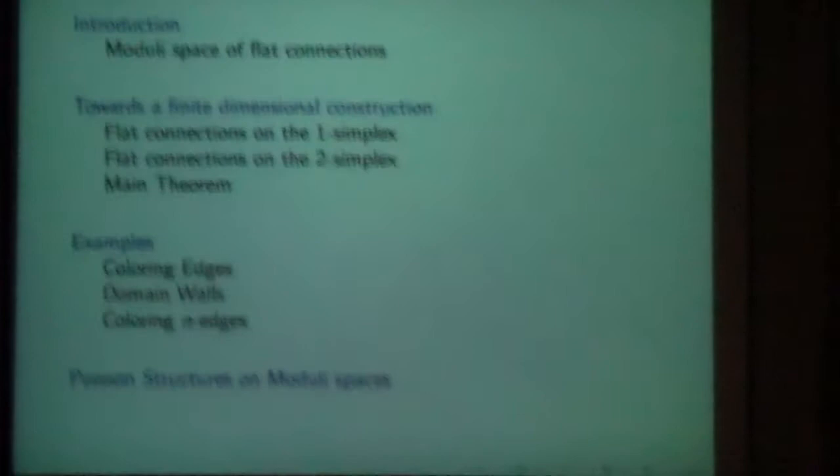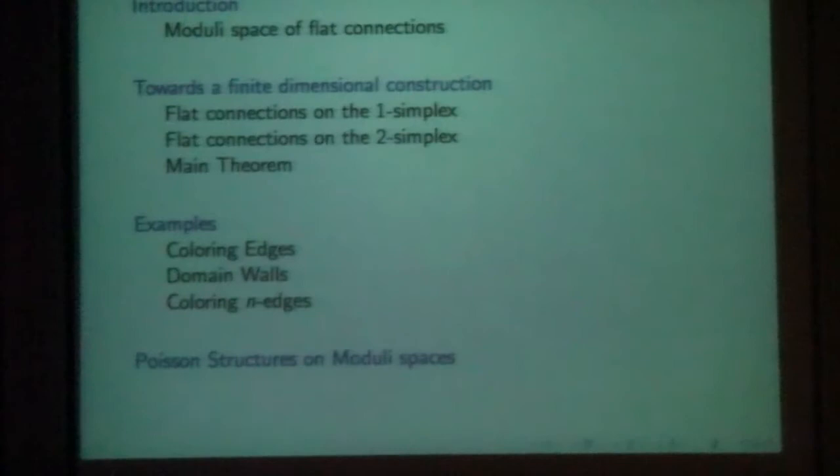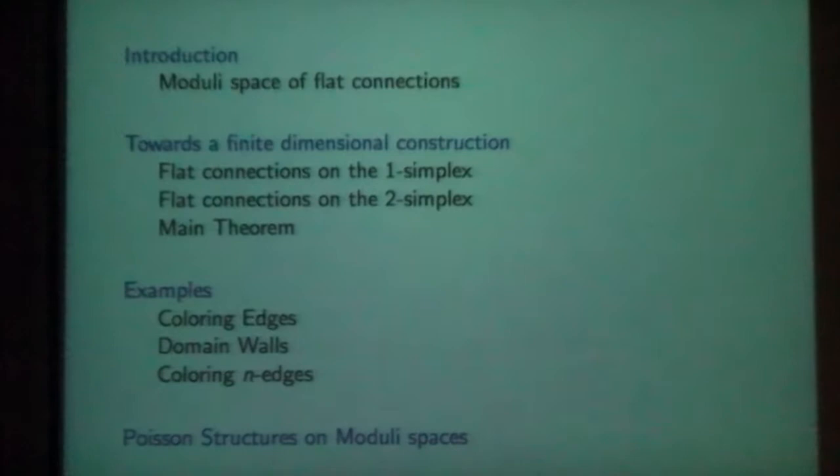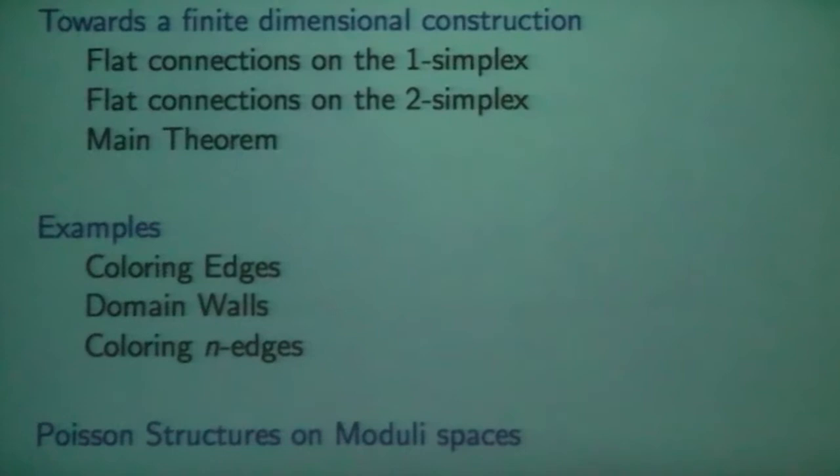In the second half of the talk, I'm just going to do some examples. Besides constructing the moduli space for a closed surface, we can also take surfaces with boundary and impose certain boundary conditions. So we'll come up with examples in the second half. If the first half is a little steep, I think the examples will be easy for everyone. Finally, I might mention something about Poisson structures at the end.